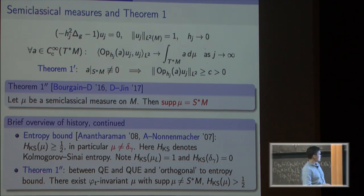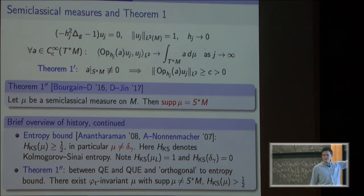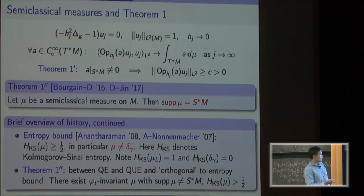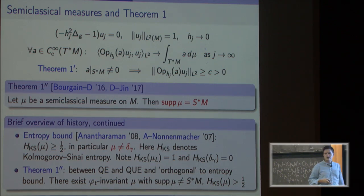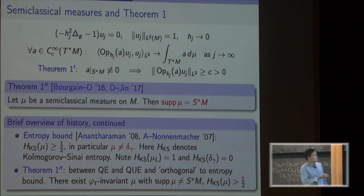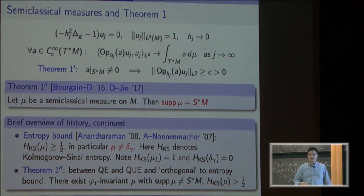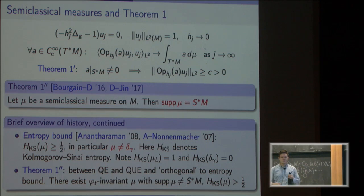Comparing the entropy bound and Theorem 1 double prime: they both lie between quantum ergodicity and quantum unique ergodicity, talking about the whole sequence of eigenfunctions, though neither gives QUE. They give restrictions on how badly equidistribution can fail. They are somewhat orthogonal — there exist measures excluded by one but not the other. In particular, there exist flow-invariant measures with entropy bigger than one-half, arbitrarily close to one, whose support is not the whole cosphere bundle.